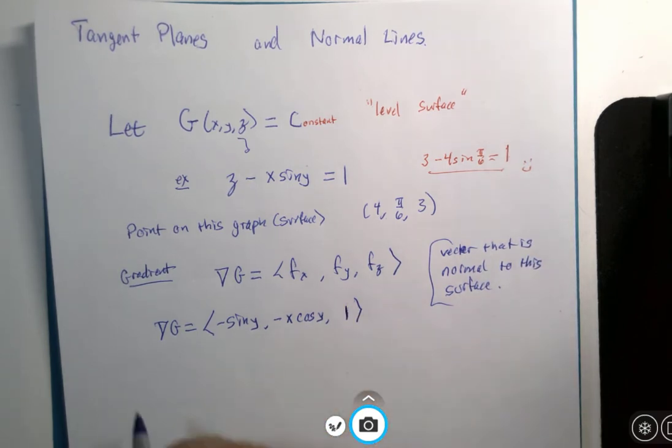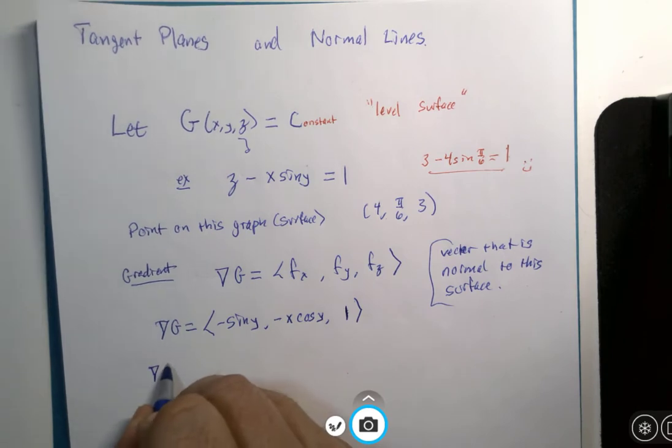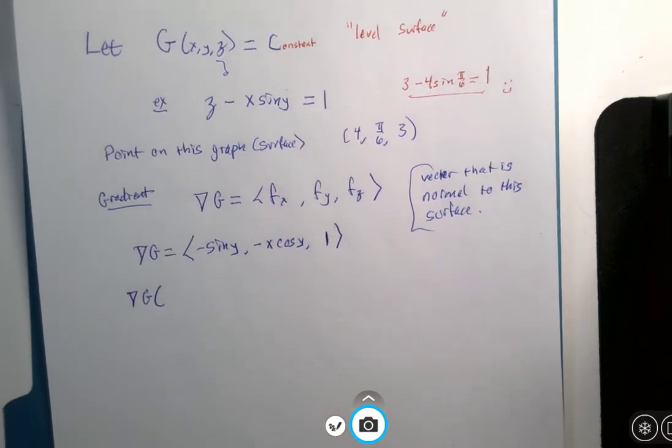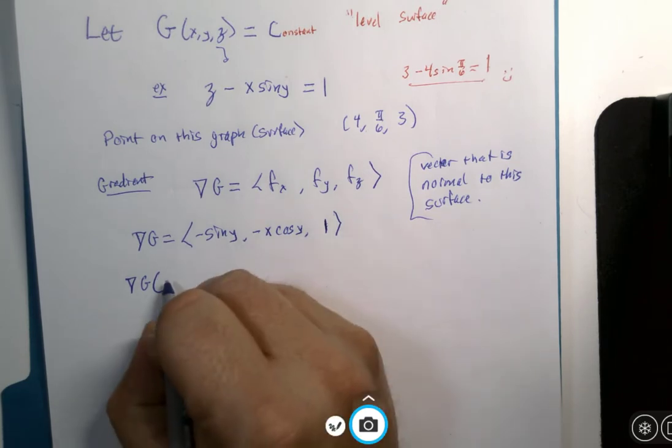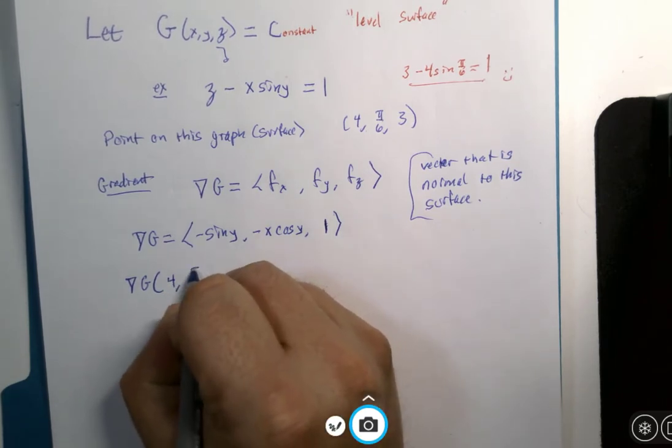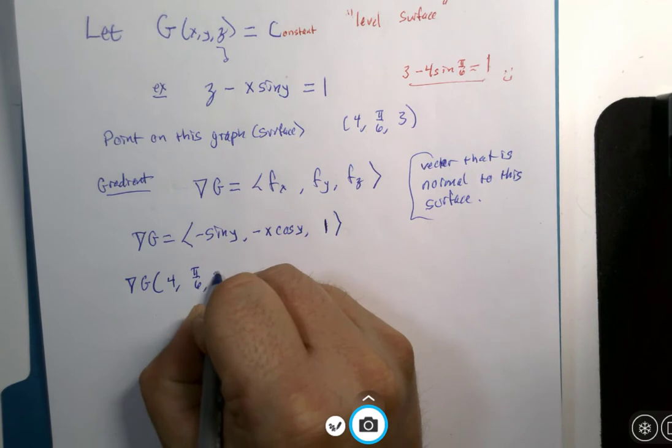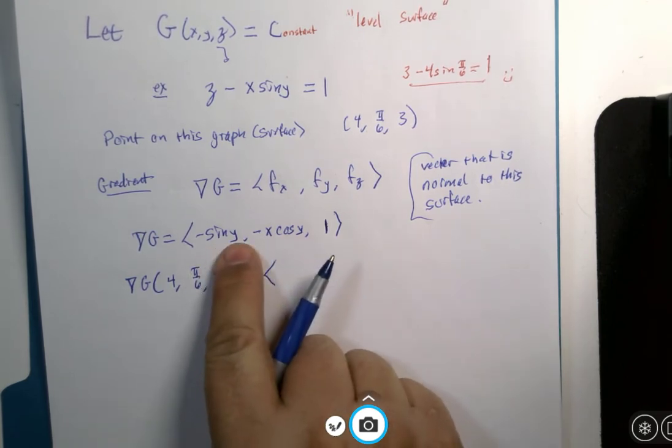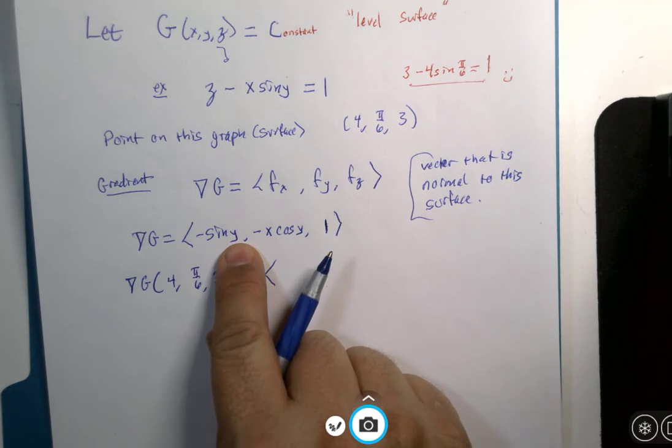So if I calculate the gradient at this given point, and this point has coordinates (4, π/6, 3), let's see, the sine of π/6 is 1/2, I'm going to get negative 1/2.